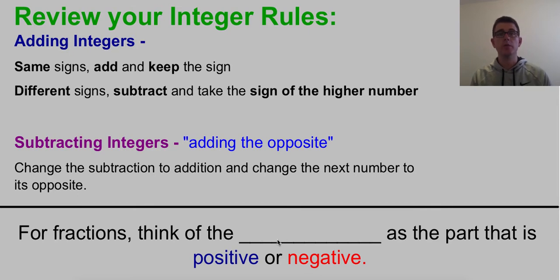First thing we're going to do is review our integer rules. This is the part you need to fill into your notes. Remember for adding integers, if they have the same signs, add them together and keep the signs. Same signs, add and keep.